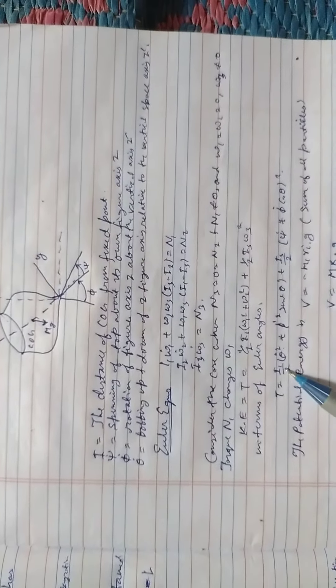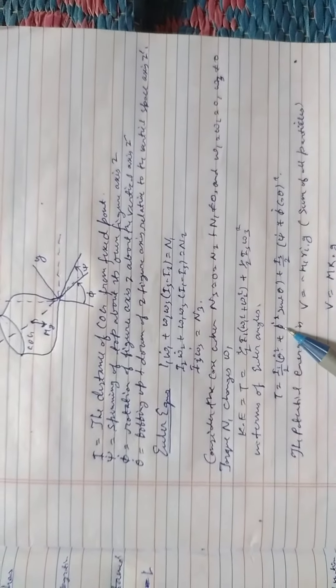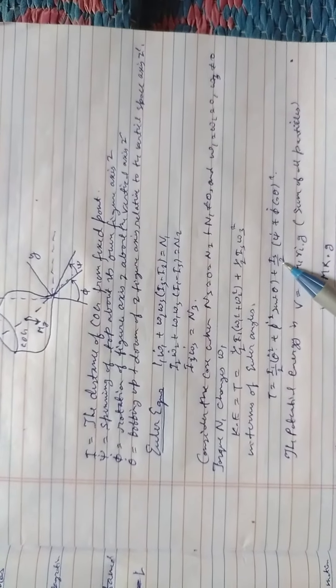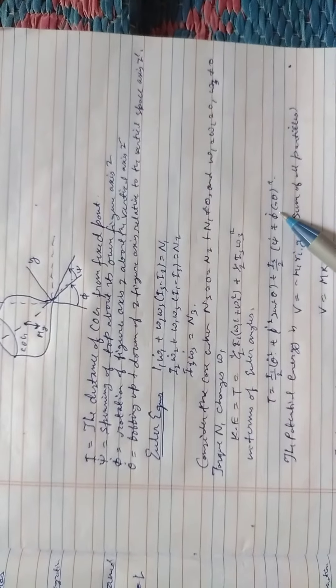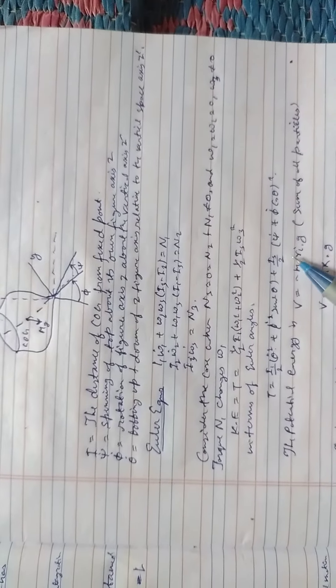In terms of Euler's angles T is equal to I1 by 2 times theta dot square plus phi dot sine square theta plus I3 by 2 times psi dot plus phi dot cosine theta whole square.